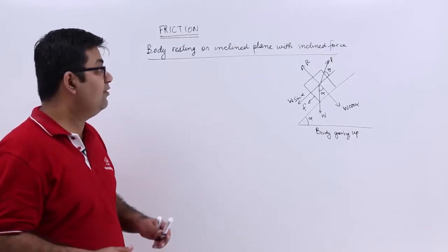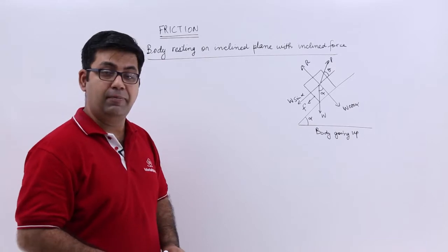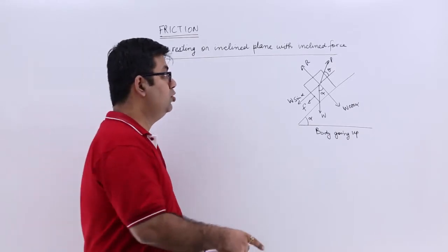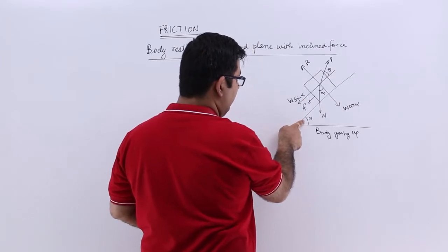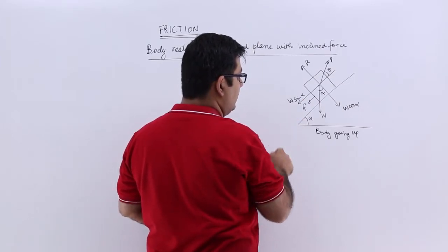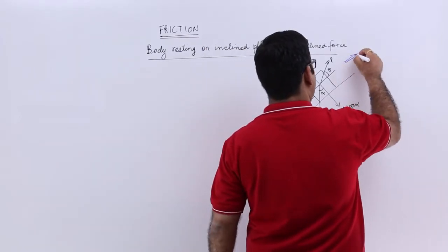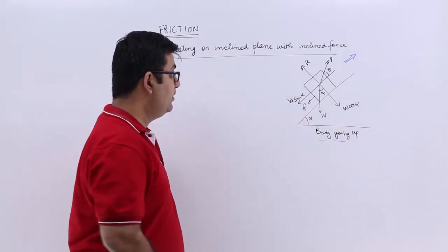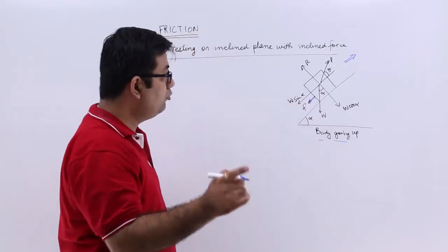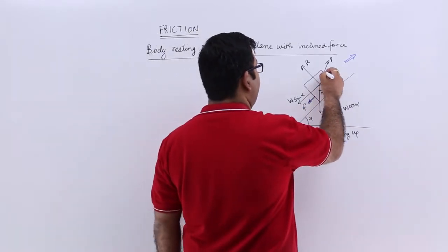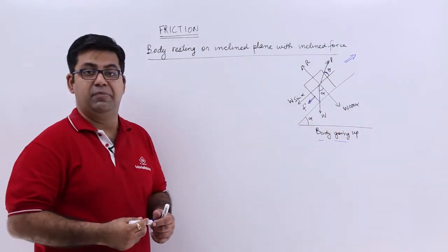After the horizontal plane, we will look at the body on an inclined plane with the force also inclined. This is the inclined plane at an angle of alpha to the horizontal. In this case the body is going up, so this is the direction of motion. This means the frictional force will act opposite to that motion. The force is being applied at an angle of theta parallel to the inclined plane.